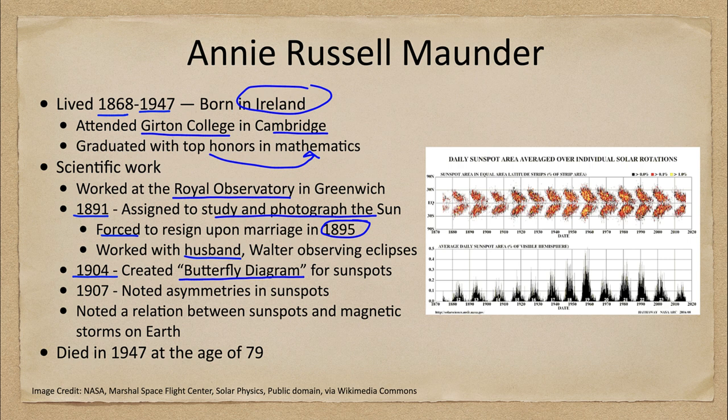The butterfly diagram shows that sunspots forming at the beginning of the cycle are at higher latitudes, closer to around 30 degrees north or south, and then progressively get closer and closer to the equator over the course of the cycle. As you look at that, you might be able to imagine seeing a bunch of butterflies flying sideways — that's how it gets its name.